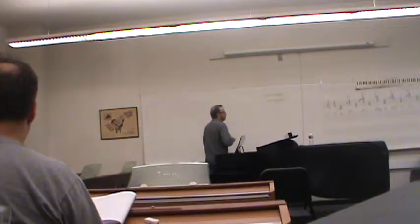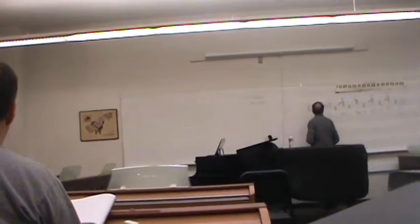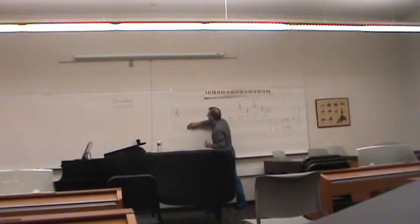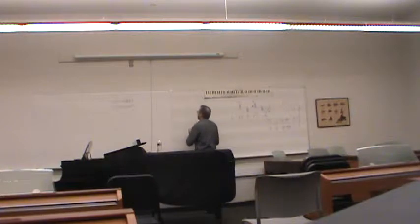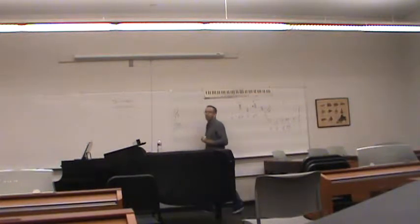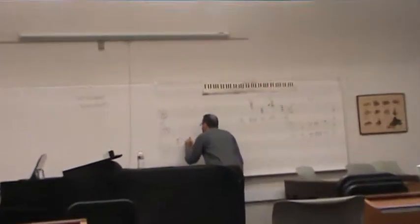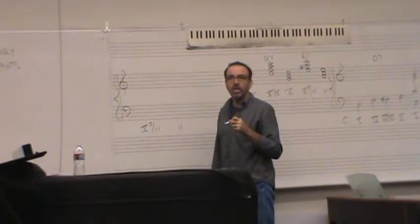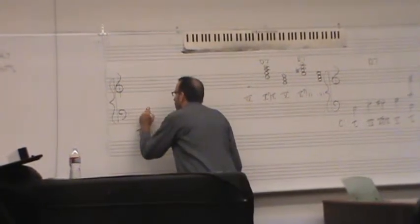Okay, so now let's just make sure we know how to resolve these things. In part writing, these secondary dominants are just like any other dominant 7th chord. So if I'm using, let's say, V7 of ii to ii, then I've got to resolve it as I would any other dominant chord.